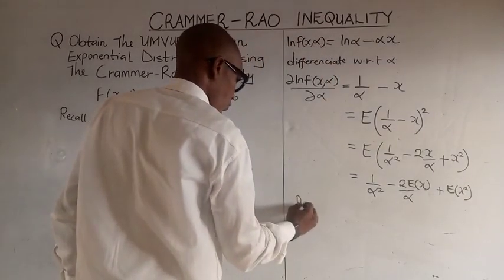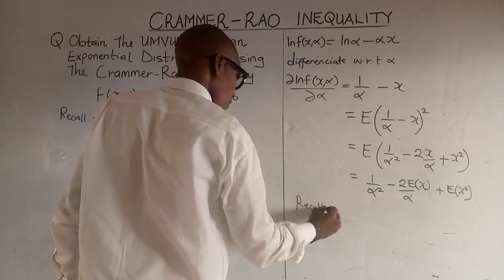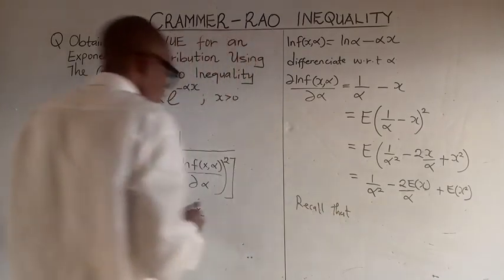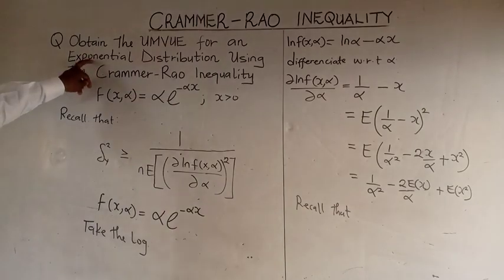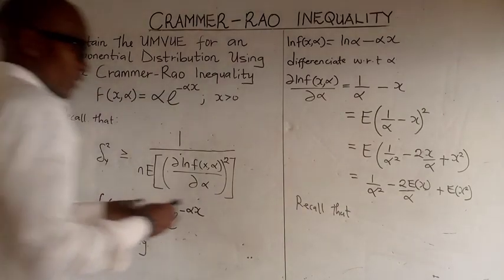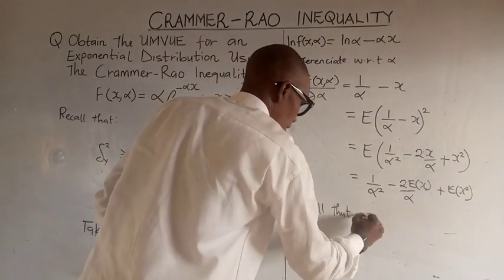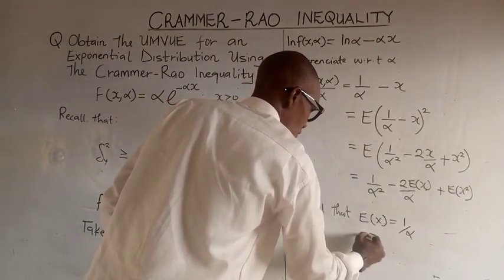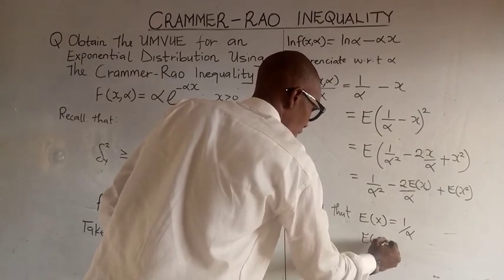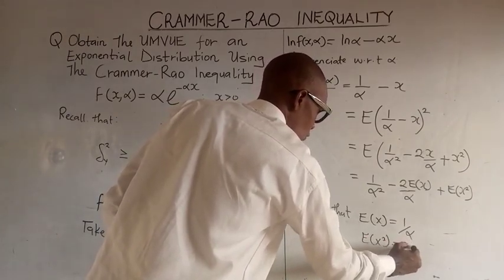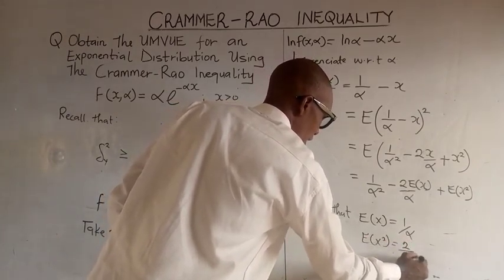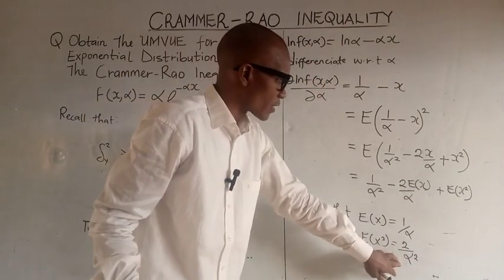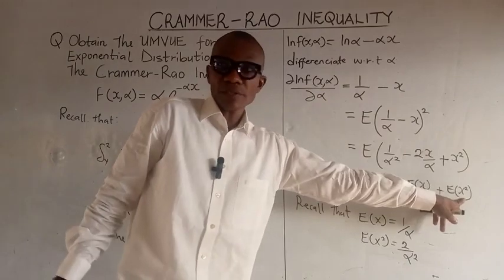We also need to recall that from the exponential distribution, expectation of x is equal to 1 over alpha, while expectation of x squared is equal to 2 over alpha squared. So all we need to do is substitute this into this point.